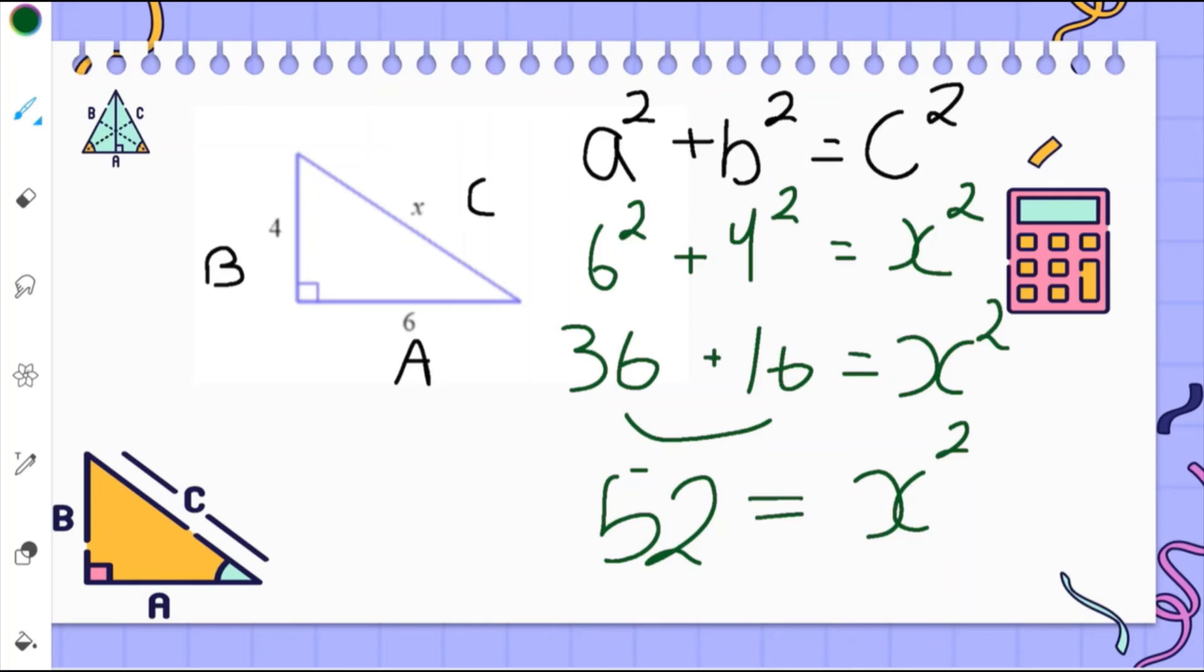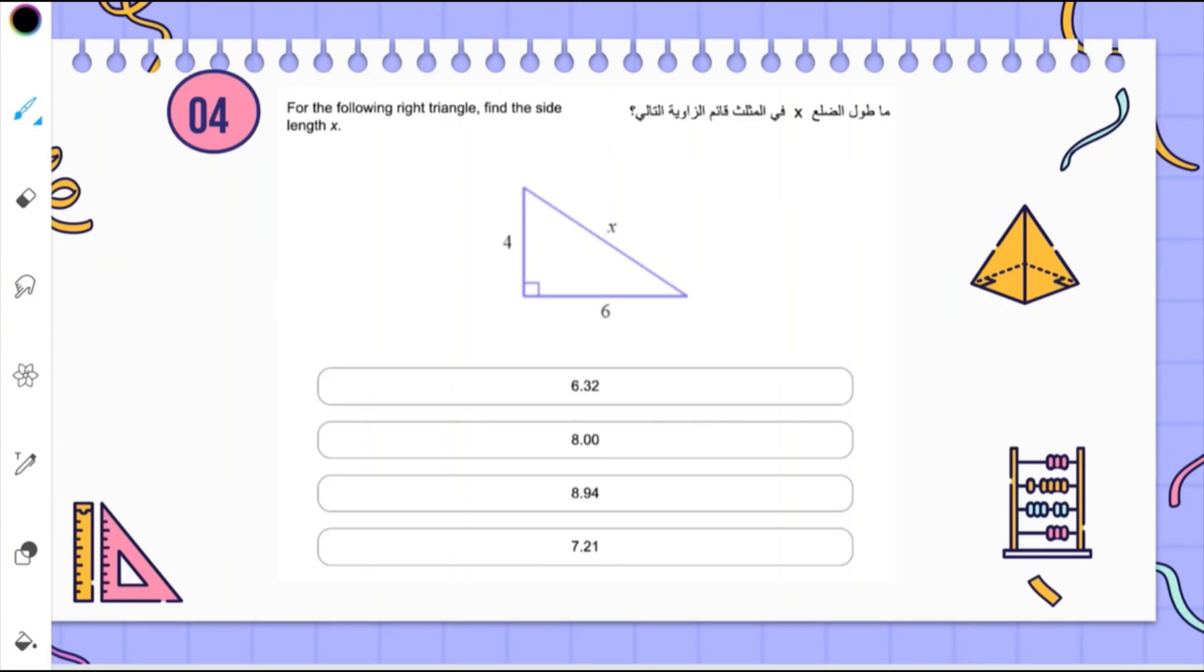Now to remove the square, we have to do the square root. So we're going to use the square root on both sides. So x is going to equal 7.21. So this is the right answer.